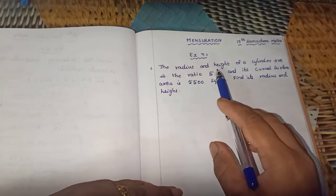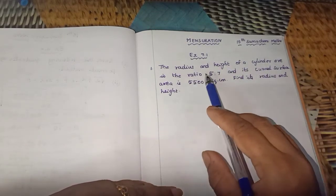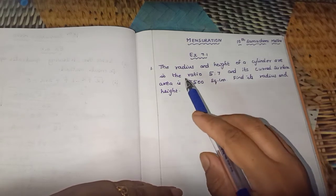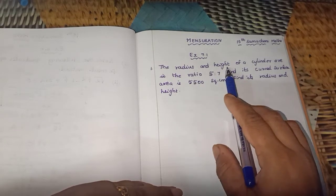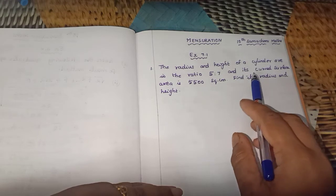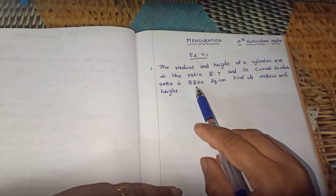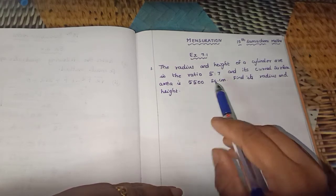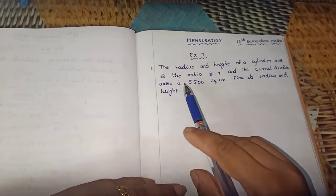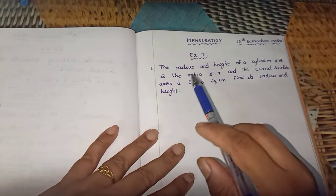The radius and height of a cylinder are in the ratio 5 is to 7, and its curved surface area is 5,500 square centimetres. Find its radius and height.